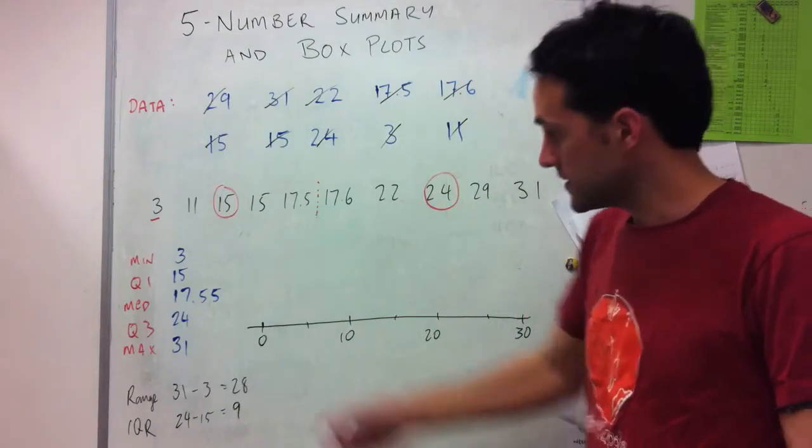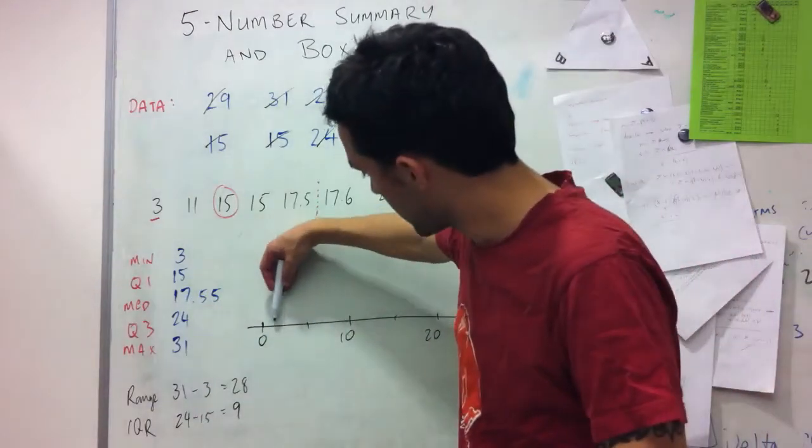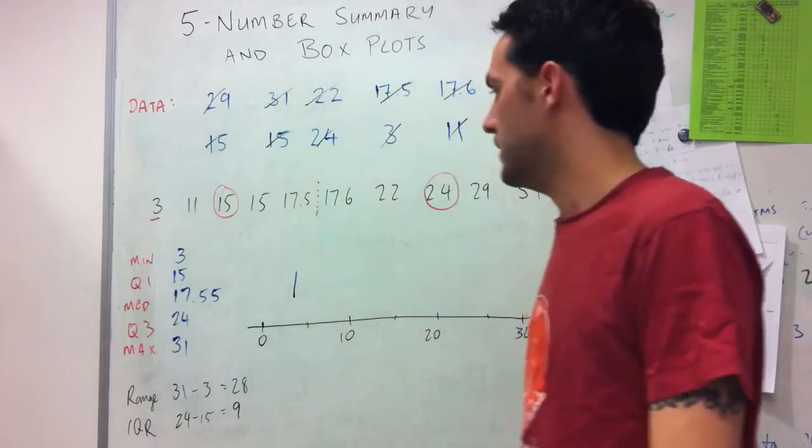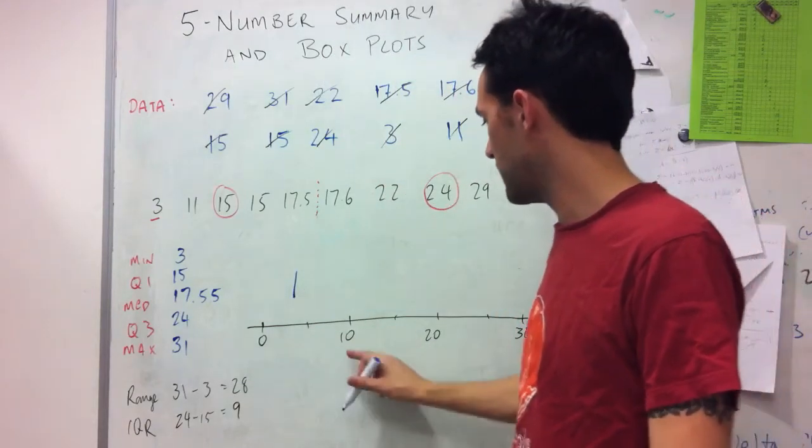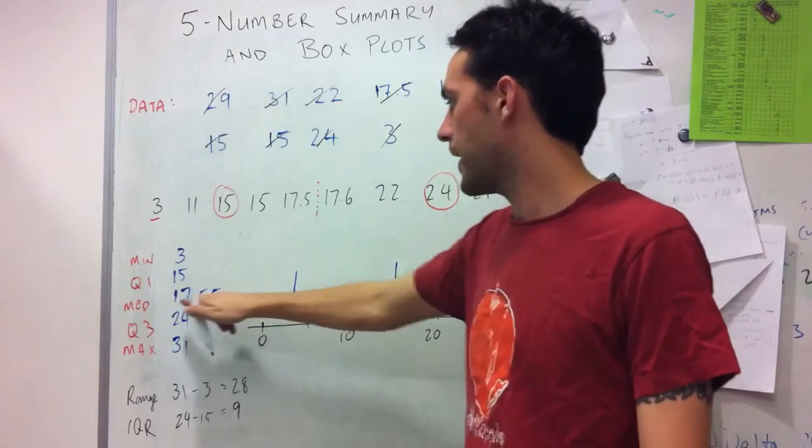So I basically just put in a line for each of these values. So my minimum is 3. So that comes to about here. My Q1 is 15. So that's just above here.